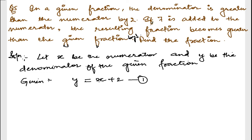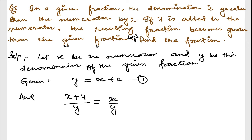Now if 7 is added to the numerator, so the new numerator is x plus 7. The denominator remains y only — nothing is added to the denominator. The previous fraction was x by y. This new fraction x plus 7 over y becomes greater than the given fraction x by y by 1, so we write x plus 7 divided by y is equal to x by y plus 1.